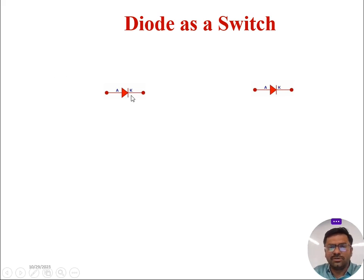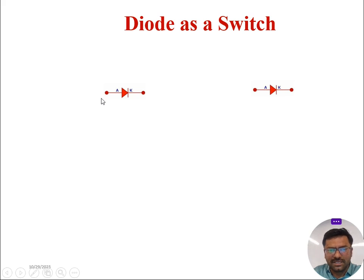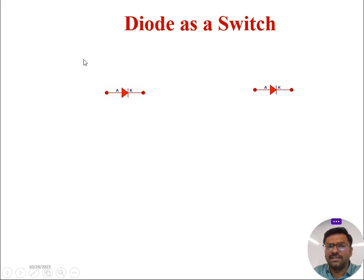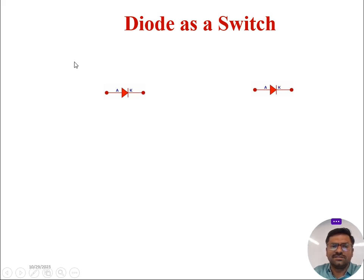We all know that diode can be biased in two ways: a forward bias and a reverse bias. In the forward bias, diode will conduct the electricity from P terminal to N terminal. In the reverse bias, diode will not allow the current to pass through it. So this gives us an advantage of using diode as a switch.